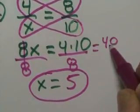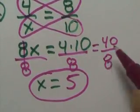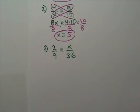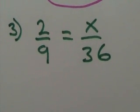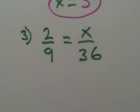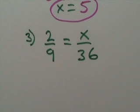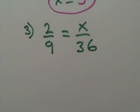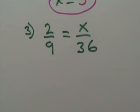If you still can't see that, this is 40. And this is 8. And 8 goes into 40 five times. Okay, here's number 3. Now this time we have x in the right-hand corner. So no problem. Again, we're going to do our cross products.